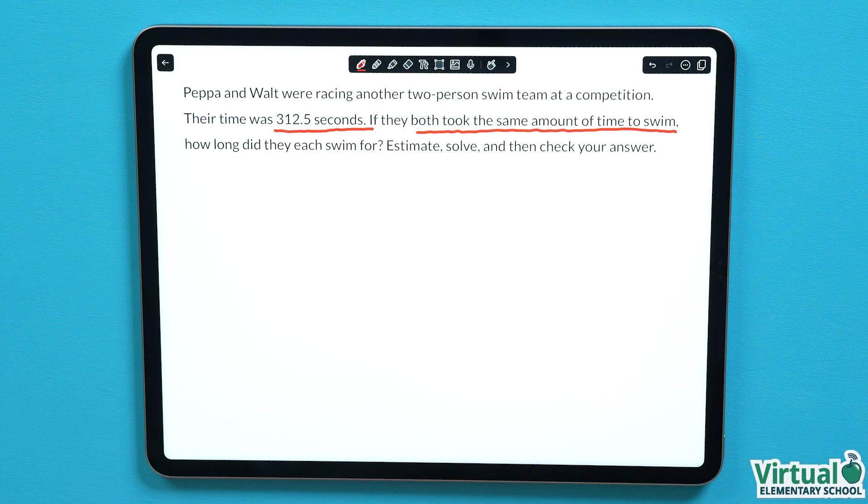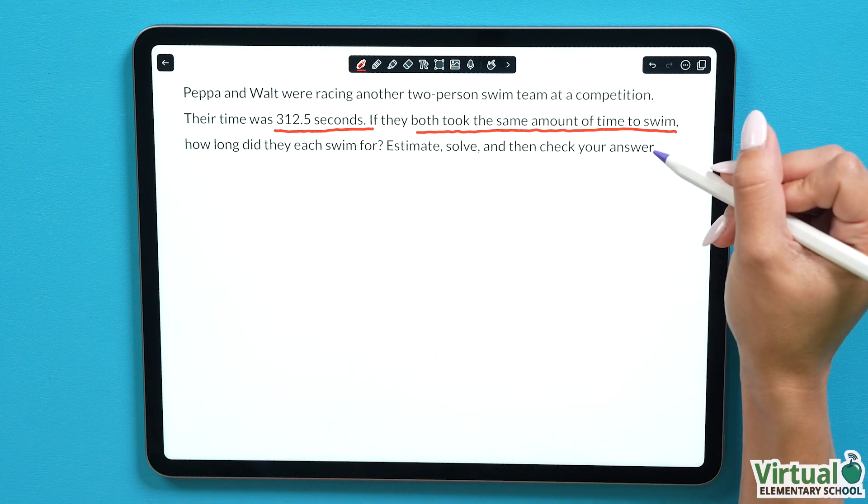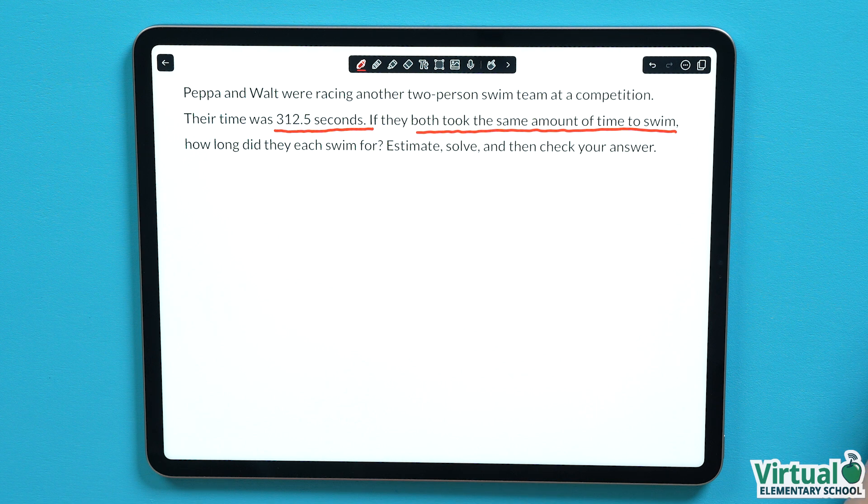The words, how long did they each swim for, tell us that we need to divide the total amount of time by 2, which is the number of people who swam, to solve the problem.